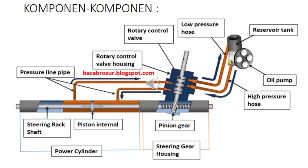Komponen-komponen hydraulic power steering itu apa saja? Kalian perhatikan pada gambar di situ sudah sangat jelas. Diantaranya ada reservoir tank, kemudian ada pompa oli atau oil pump, kemudian ada high pressure hose, kemudian ada low pressure hose, ada rotary control valve, kemudian ada rotary control valve housing, pinion gear, kemudian ada piston internal, ada power cylinder, ada pressure line pipa. Itu diantaranya adalah komponen-komponen hydraulic power steering.